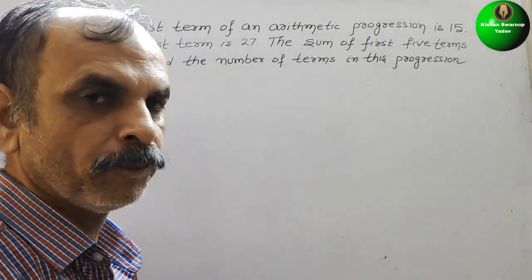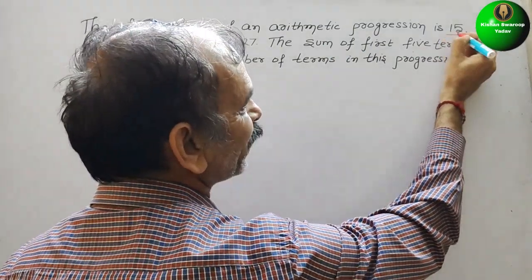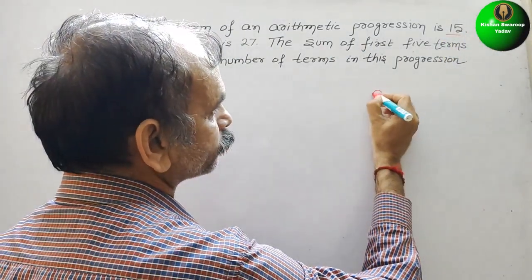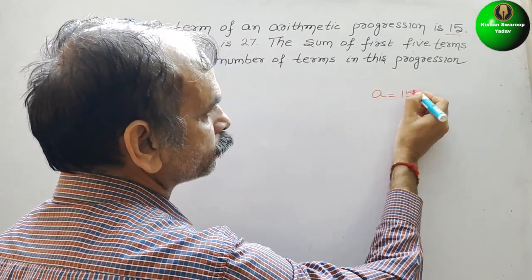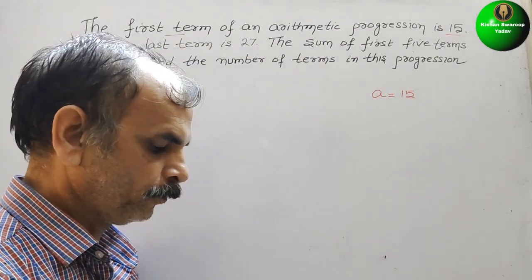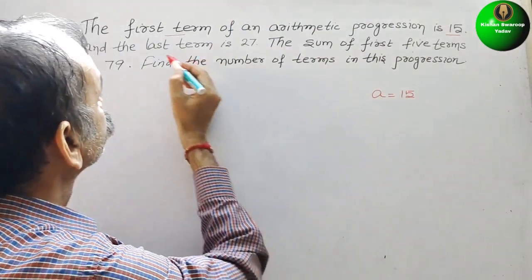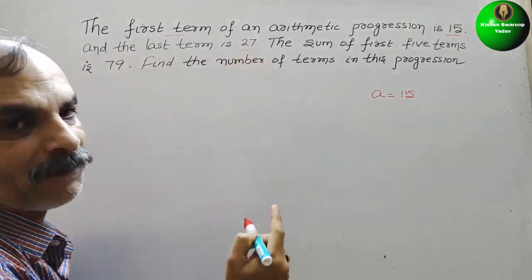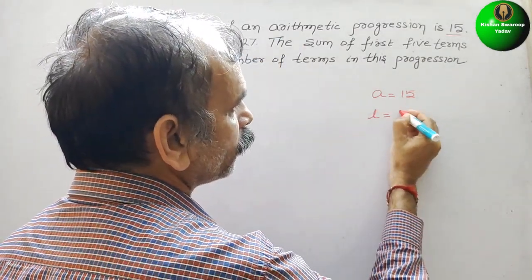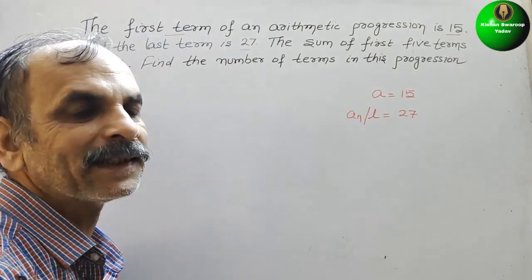What they have told: the first term is 15, that means A is 15. The last term is 27, that means L is 27. So L we can write as An also, the nth term.